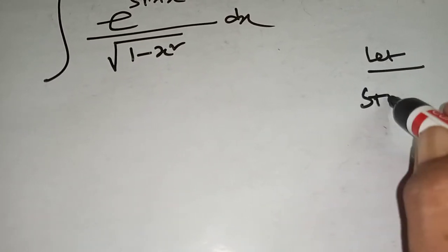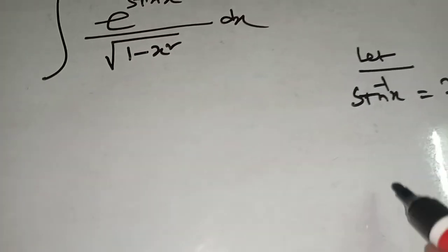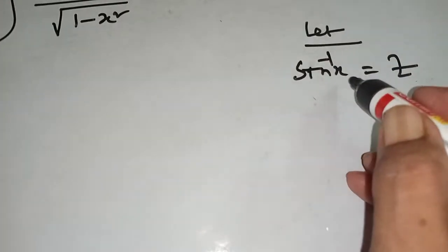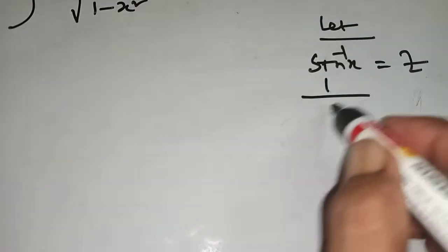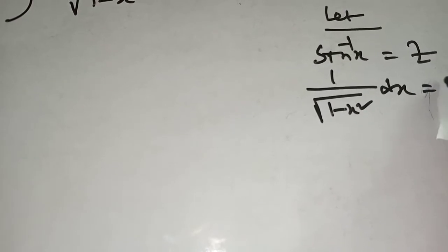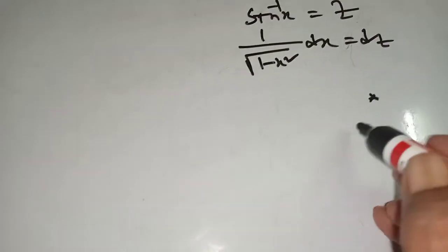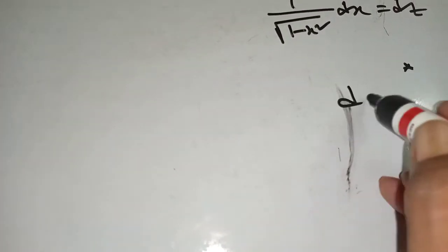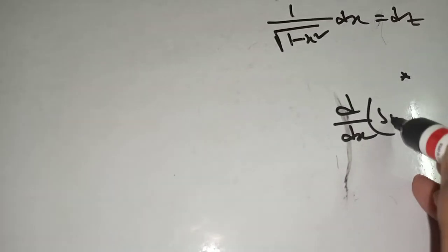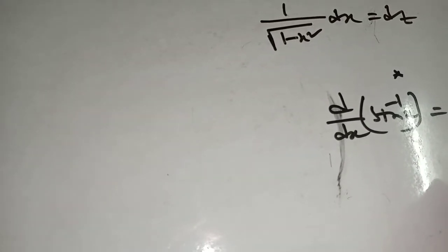Let sin inverse x equal to z. Now, d/dx of sin inverse x means 1 by root over 1 minus x square dx equal to dz. You must remember it: d/dx of sin inverse x equal to 1 by root over 1 minus x square.